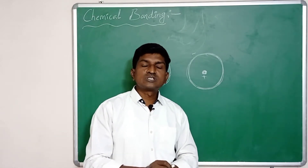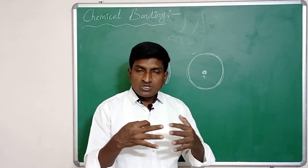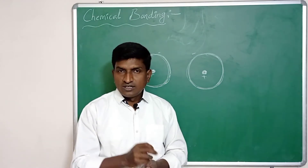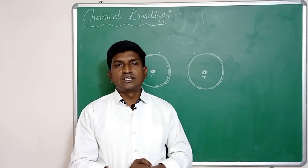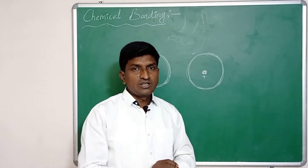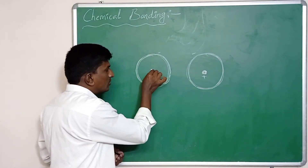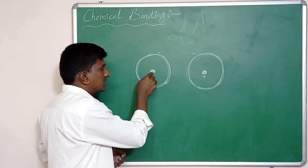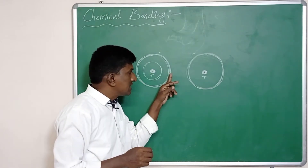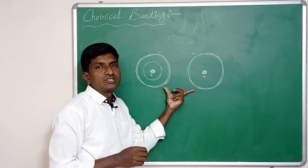If the attraction force is greater than the repulsive force, then the two atoms are combined. If the repulsive force is greater than the attractive force, then there is no formation of a bond. In a chemical reaction, there is no change in the nucleus and inner orbits; only the valence electrons cause the chemical combination of atoms.